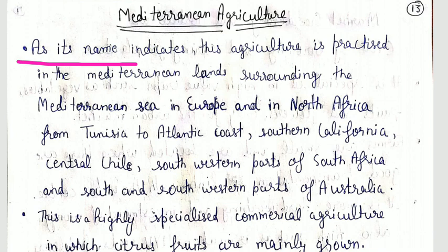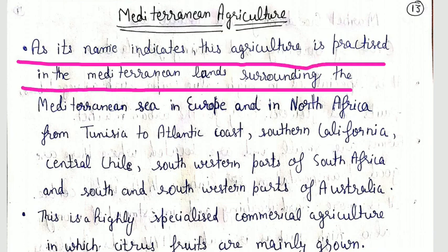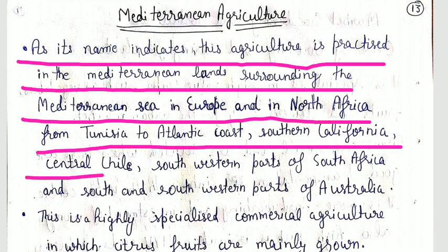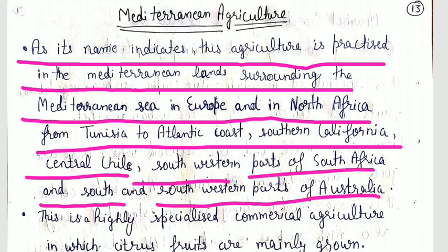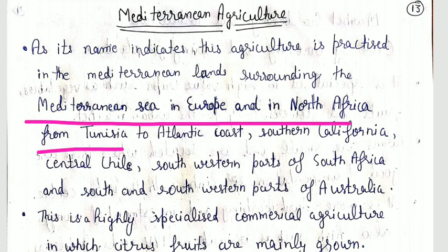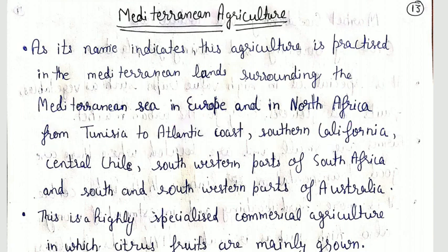As its name indicates, this agriculture is practiced in the Mediterranean land surrounding the Mediterranean Sea in Europe and North Africa from Tunisia to the Atlantic coast, Southern California, Central Chile, the southwestern part of South Africa, and the south and southwestern part of Australia.